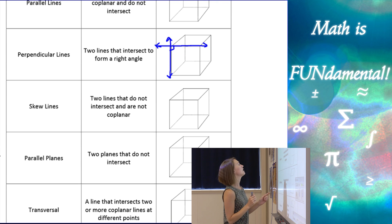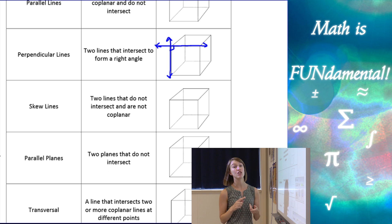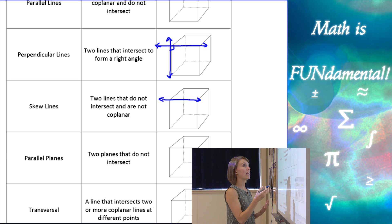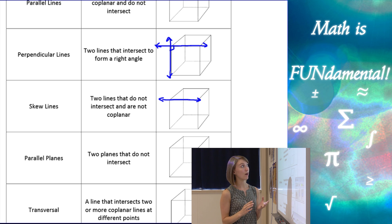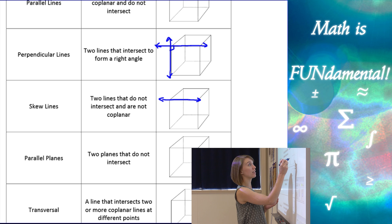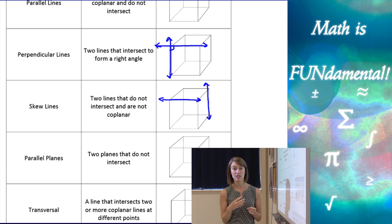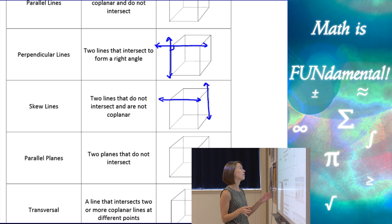A new term for us is skew lines. Skew lines are two lines that are not coplanar and do not intersect. For example, I could have this line here at the top, and I want to think — I can't choose any of the lines that lay on the same plane as that one, and I don't want them to intersect. So I could choose that one and this line. Those are two skew lines. They don't share any of the same planes and they're not going to intersect no matter how far they go.